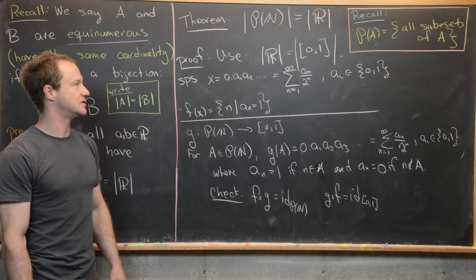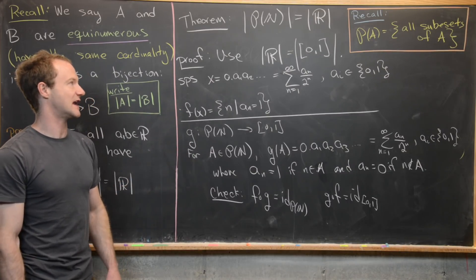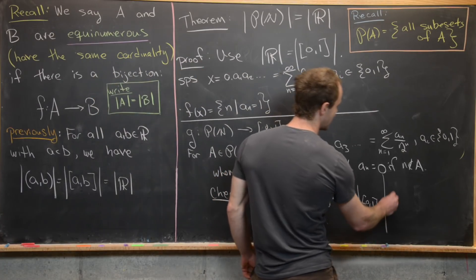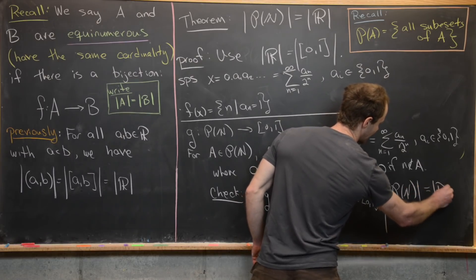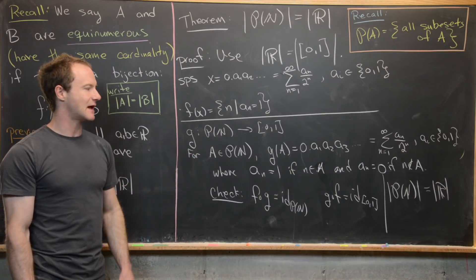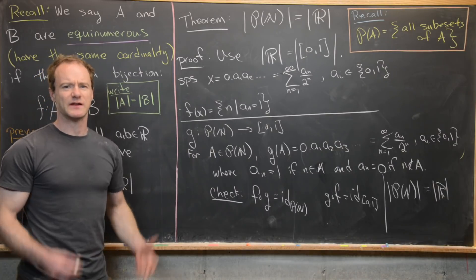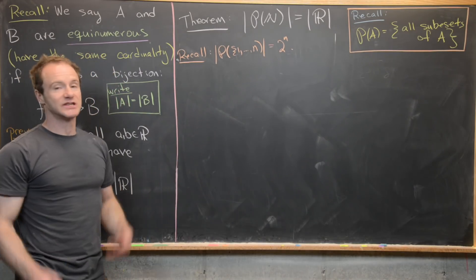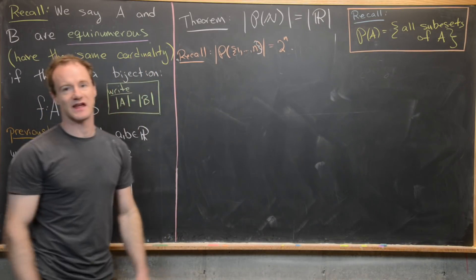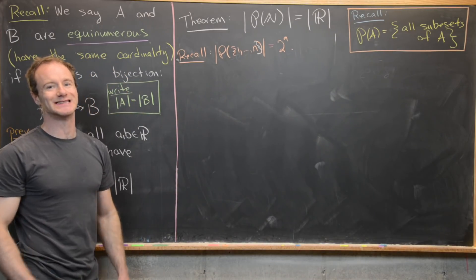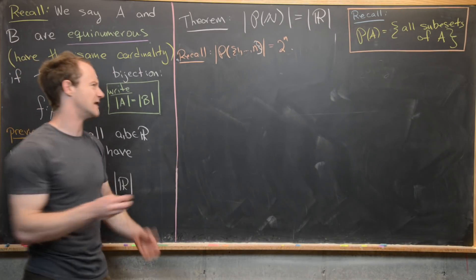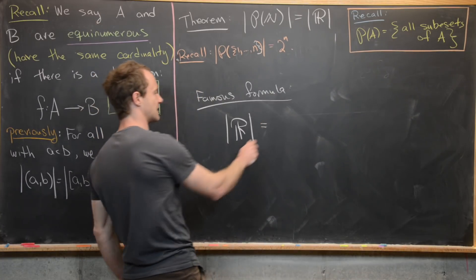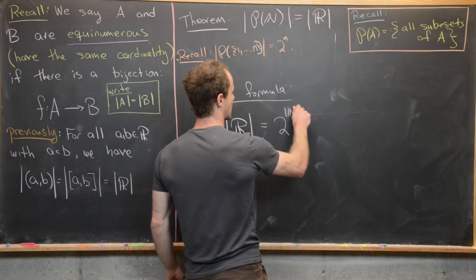That means we have a bijection between [0, 1] and the power set of the natural numbers. Combined with the bijection between [0, 1] and ℝ, we conclude that the power set of the natural numbers is equinumerous with the real numbers. Recalling our warmup — that the power set of {1, ..., N} has 2^N elements — this motivates the famous formula: the cardinality of the real numbers equals 2 raised to the power of the cardinality of the natural numbers, i.e., |ℝ| = 2^|ℕ|.